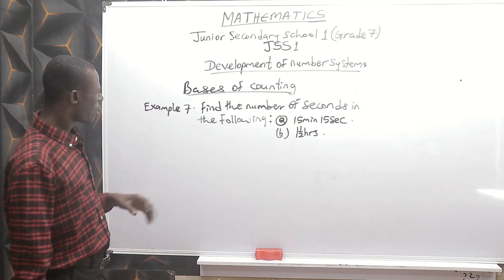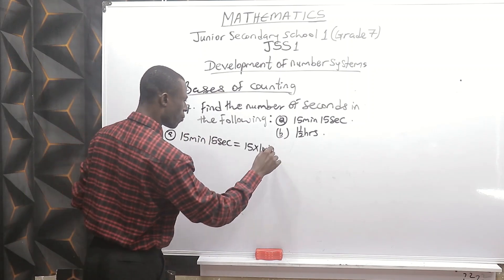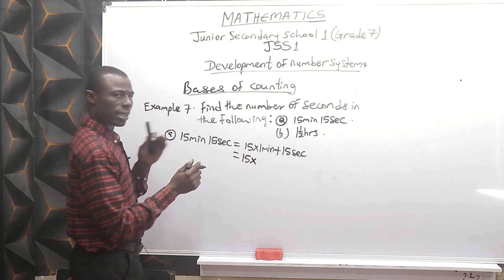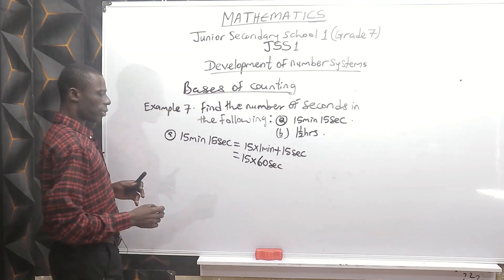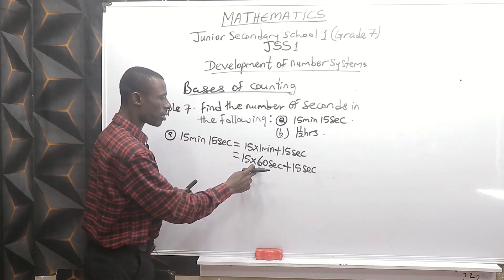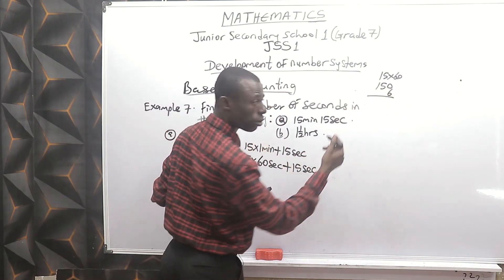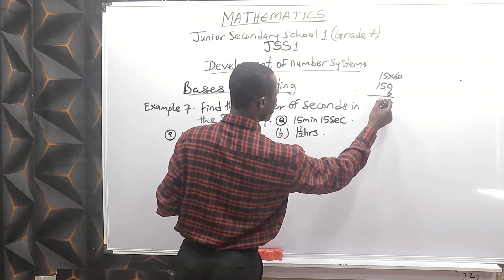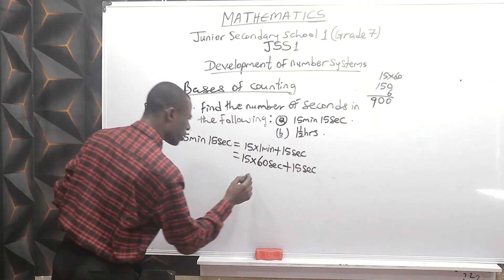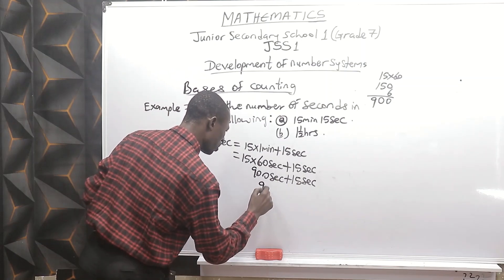Let's go to example seven, the last example under time conversion. Find the number of seconds in: 15 minutes and 15 seconds. That will be 15 times one minute plus 15 seconds. 15 times one minute is 60 seconds, so 15 times 60 plus 15 seconds. 15 times 60 is 900 seconds, plus 15 seconds gives 915 seconds.